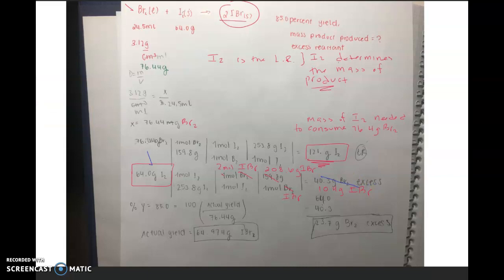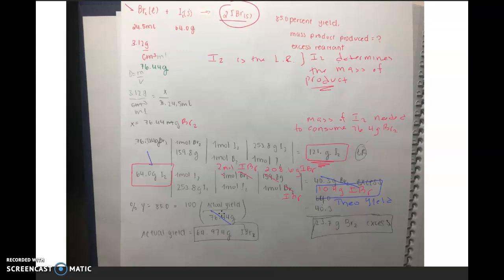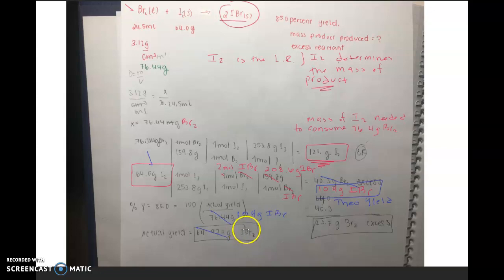As far as this calculation is concerned, this right here is the theoretical yield. Now to calculate the actual yield — remember that here you put 76.4 grams of IBr, but yield refers to the product. Theoretical yield is the amount of product produced from a stoichiometric calculation, so this is 104 grams of IBr. I don't know how you got IBr here, because this mass is the mass of bromine, so be careful with that.